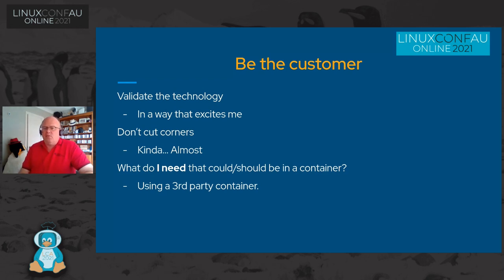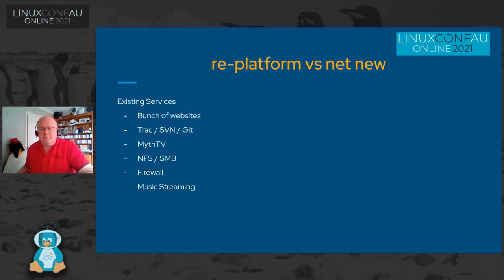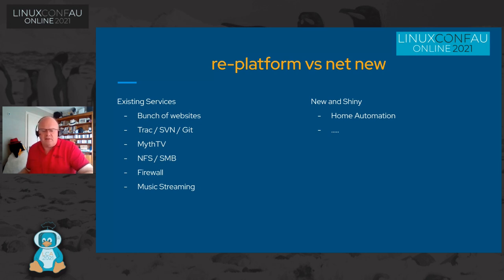I try to look at what I need that could or should be in a container using a third-party container. Many of these things I could rebuild the container image myself, but sometimes you just want to use a community build of a tool or technology. So I looked at what I'm running at home — existing websites, a Trac server with SVN and Git, MythTV, my firewall as a DDWRT appliance. I had some Xiaomi temperature sensors and a few smart plugs that I'd hacked. I wanted to integrate these, so I was looking at home automation, and there are lots of people trying to run things like Home Assistant in a container.